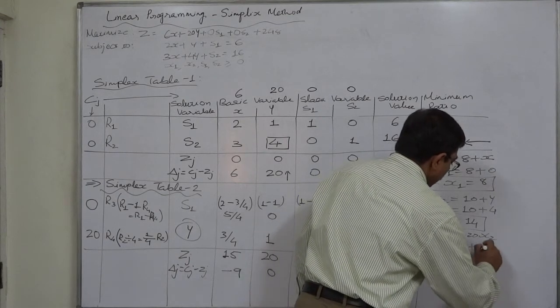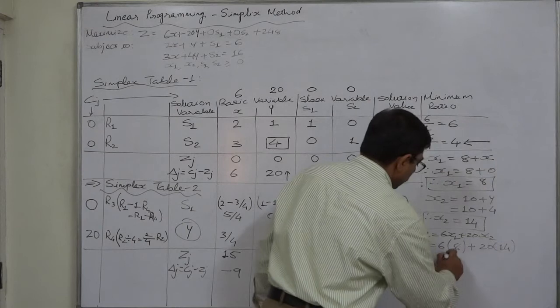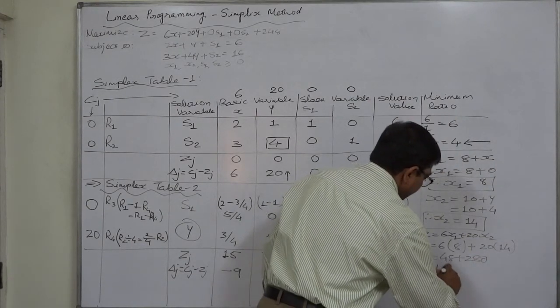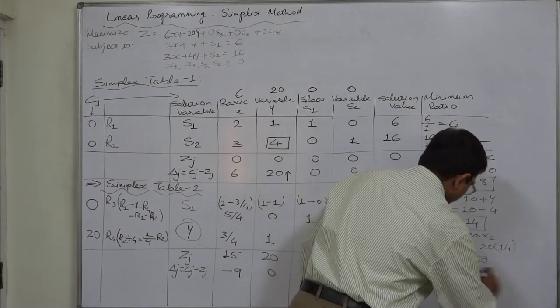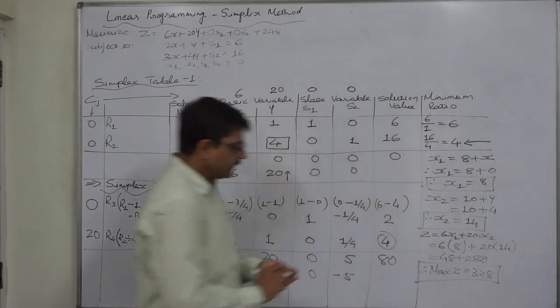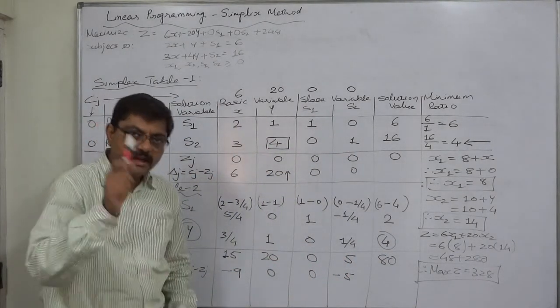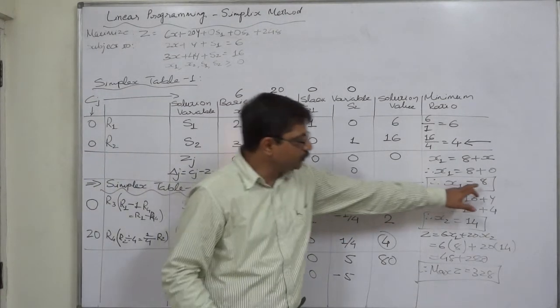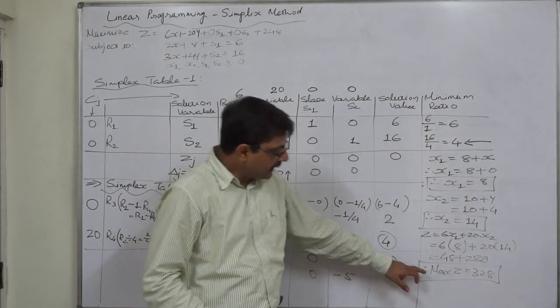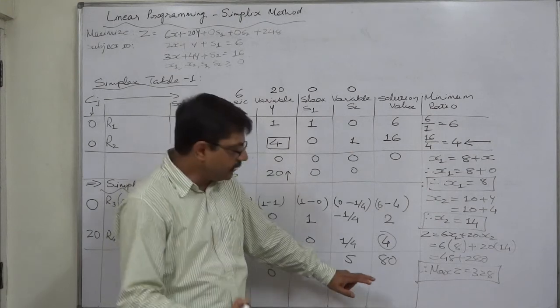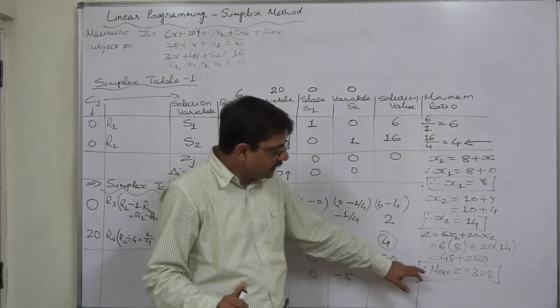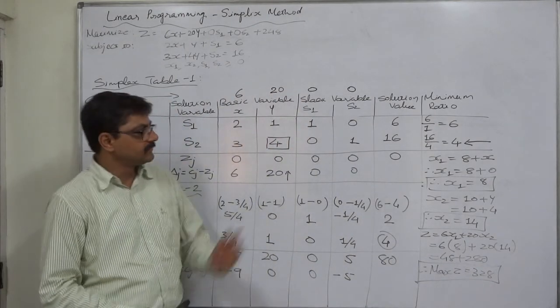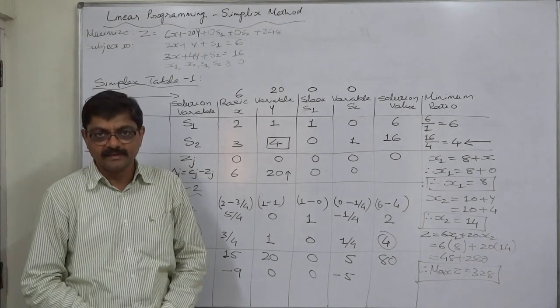Hence, now we can say that the optimal solution of the original problem having x1 and x2 as variables is x1 equals 8, x2 equals 14. And since this is a maximization problem, z value should be considered at its maximum possible value, and that comes to 328. I hope you would have enjoyed the entire process of solving the problem. Thank you very much.